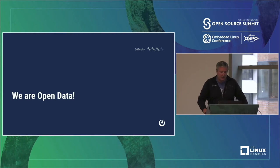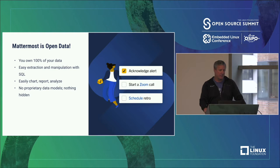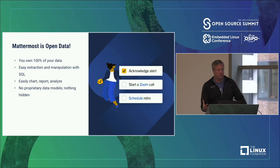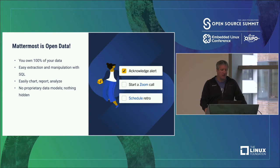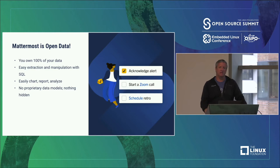Another thing is open data. I don't think enough people talk about this. Mattermost is open data — you own 100% of your own data, and that's a really powerful concept. Not only can you own 100% of your data, we do it in a SQL database. The APIs and all that stuff are fully open. There's no magical mystery of how to manipulate that SQL data. It makes charting, reporting, and analyzing data out of that SQL database extremely easy. There are no proprietary data models, nothing hidden. You control your own data.